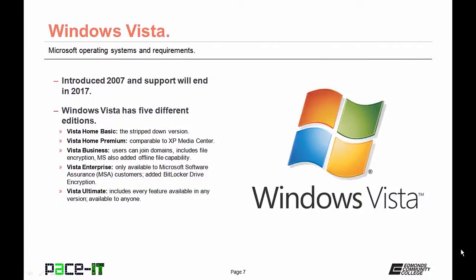Vista Business allowed users to join domains, added file encryption, and Microsoft also added offline file capability. Vista Enterprise was only available to Microsoft Software Assurance customers, with the added benefit of BitLocker drive encryption — whole drive encryption.